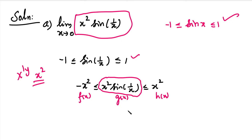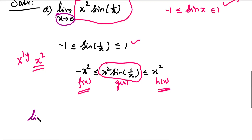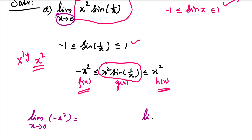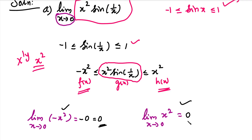Now we will use the Squeeze Theorem. We find the limit of f(x) and h(x) as x tends to 0. f(x) is minus x², so limit x tends to 0 of minus x² — substituting x = 0 gives minus 0² = 0. h(x) is x², so limit x tends to 0 of x² — substituting x = 0 gives 0² = 0. The limit values of both functions are the same, equal to 0.